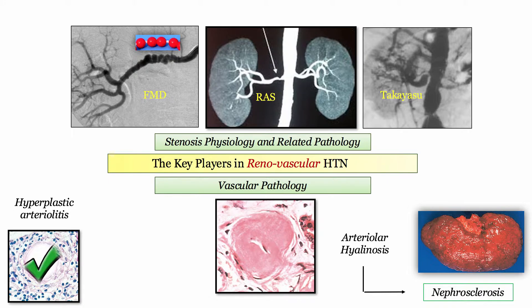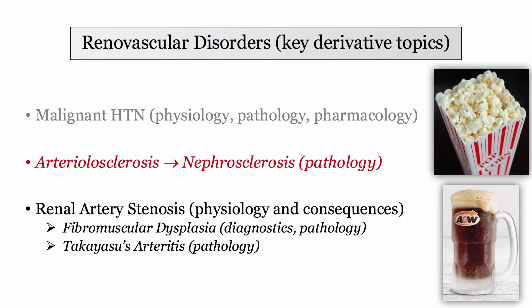Picking up the discussion, we covered malignant hypertension in our previous video. In this discussion, we'll shift our attention to arteriolar hyalinosis and the accompanying pathology of nephrosclerosis. That titillating topic is next in the queue, so grab your popcorn and root beer and let's get started.